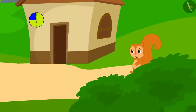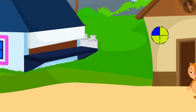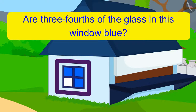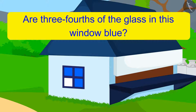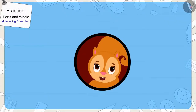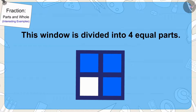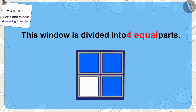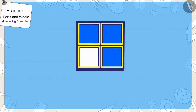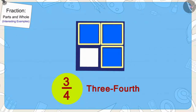Now Chanda started looking for that window and she finally found one. Are three-fourths of the glass in this window blue? You can stop the video to find the answer. Yes, your answer is absolutely correct. This window is divided into four equal parts, out of which three parts are covered with blue-colored glass. In this way, three-fourths of the window has blue glass.